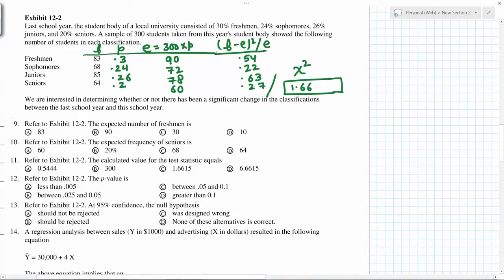Number nine: the expected number of freshmen is 90, expected frequency of seniors increase. Calculate the test statistic: 1.66. This is the test statistic.